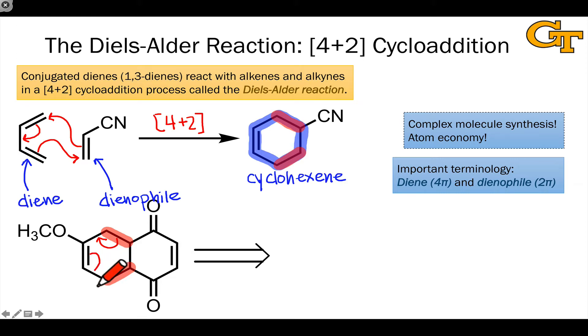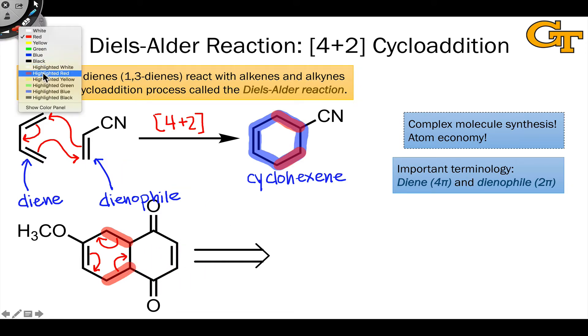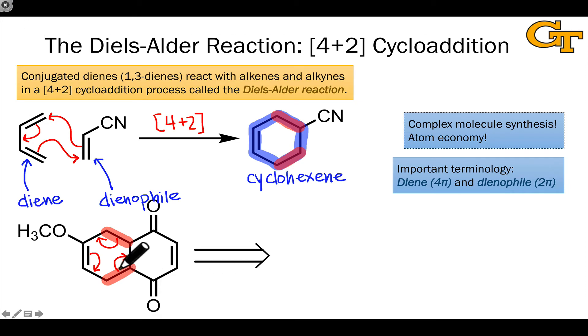So we can use cyclic electron flow in a retrosynthetic or backwards sense to generate the diene and dienophile that can be used to construct this cyclohexene using a Diels-Alder reaction. And so I can just follow my cyclic electron flow, follow the arrows backwards to generate the diene and dienophile here.